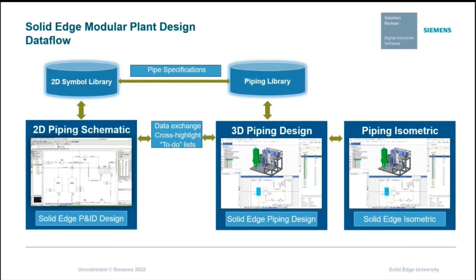Let's take a look at the workflow for modular plant design, showing the two modules P&ID and Piping Design. The intelligent data from P&ID is communicated directly to Piping Design using a data exchange link with no need to re-enter again. In Piping Design, a to-do list organizes the instructions and tasks so nothing gets missed. Cross-highlighting enables design efficiencies as components are placed and pipelines are routed.